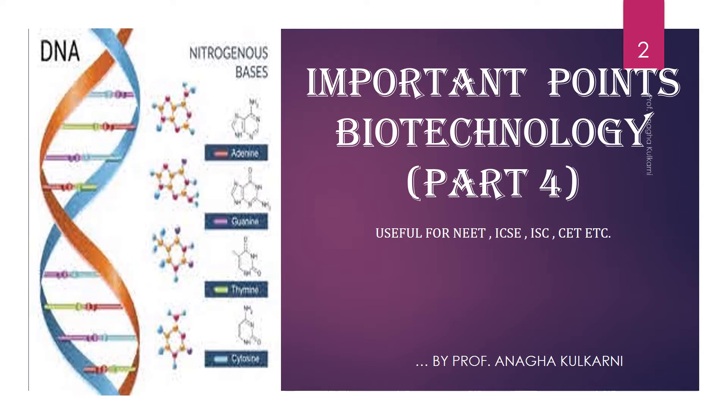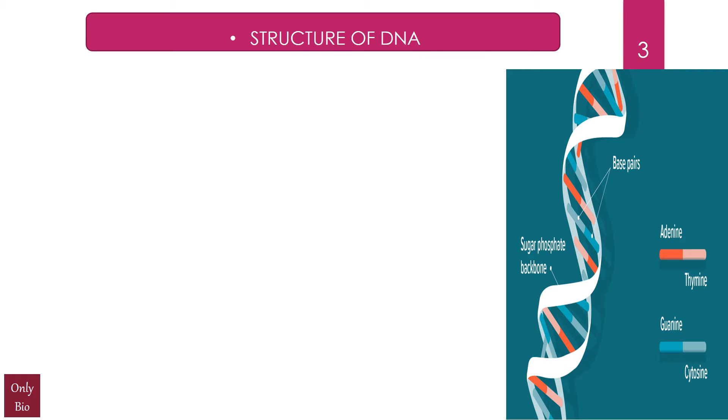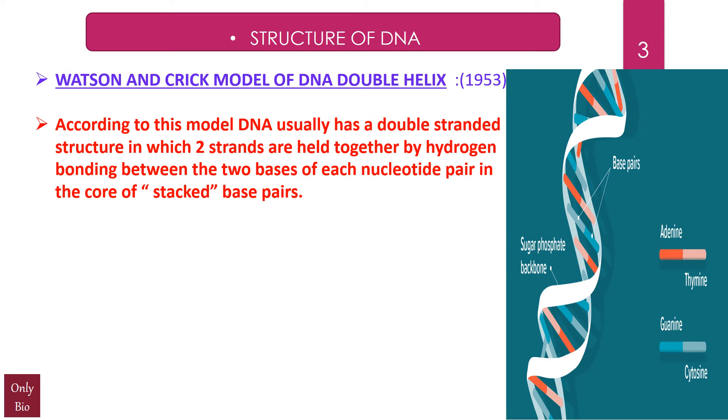Let's understand the structure of DNA, friends. On the right-hand side, you can see one picture of the DNA double helix for your reference. We're talking about the Watson and Crick model of DNA double helix. According to this model, DNA usually has a double-stranded structure in which two strands are held together by hydrogen bonding between the two bases of each nucleotide pair in the core of stacked base pairs.